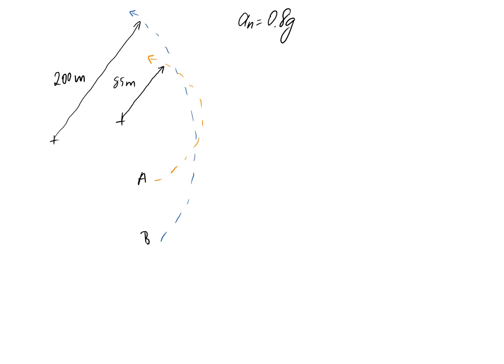It would make sense, in a question like this, to use the normal tangential coordinate system, simply because you've got circular motion, and you've been given the radius of the curves in both cases, and also you're looking at normal acceleration here as well.